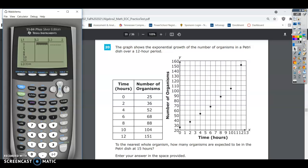And then the number of organisms is going to be your L2, your second list. So 25, 36, 52, 68, 88, 104, and 151. Always make sure that you have the same number in your L1 and your L2. The columns need to have the same amount of numbers in there. You can see that 12 and 151 line up. So these both have the same number.